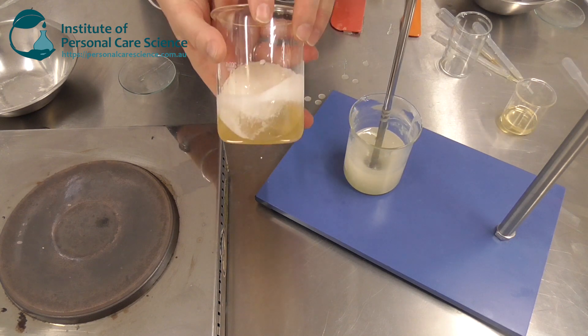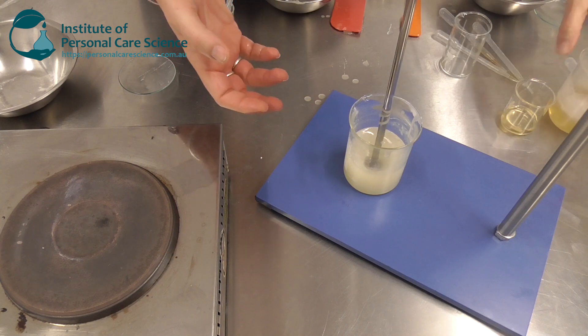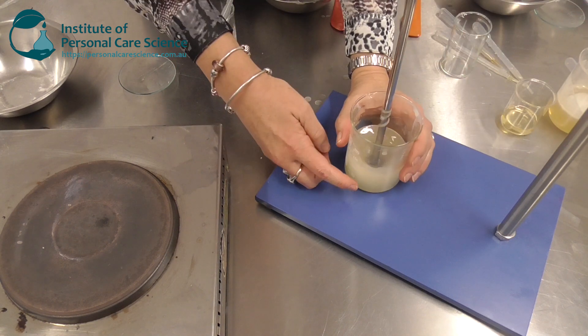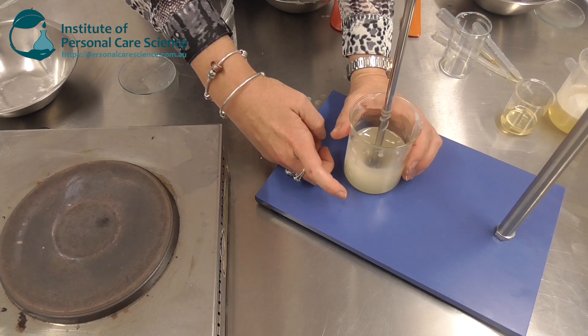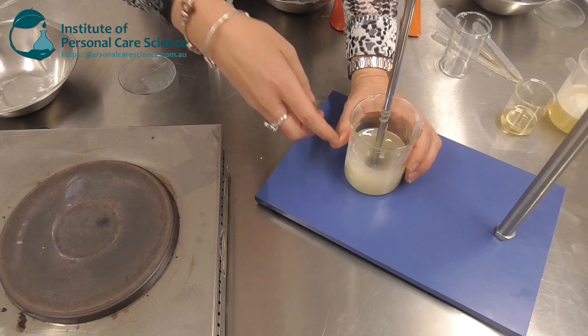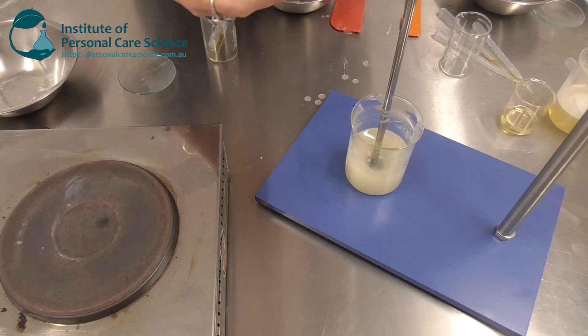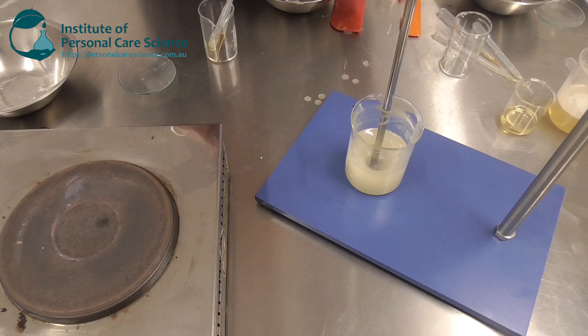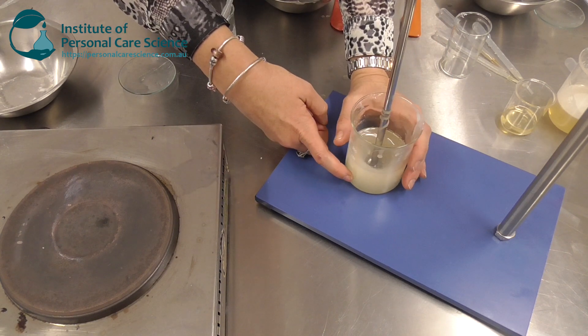Just as you saw with the cleansing oil, as you can see it's already started to go nice and clear. The rest of those bubbles will go overnight. The cleansing balm of course will set and we want it to set so that it's that balm form. So we need to make sure that it is very well mixed before it cools down to a point that we can no longer pour it.